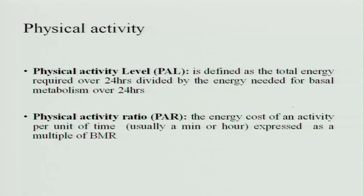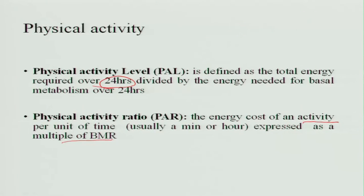Physical activity level is defined as the total energy required over 24 hours divided by the energy required for basal metabolism over 24 hours — that is, the active state compared to the inactive state in the body. Physical activity ratio is the energy cost of an activity per unit time, usually per minute or per hour, expressed as a multiple of BMR.